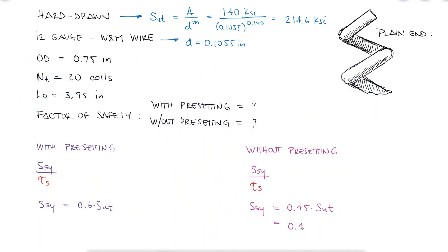Therefore, the shearing yield strength is 96.57 ksi for the spring without a preset and 128.76 ksi for the spring with the preset.